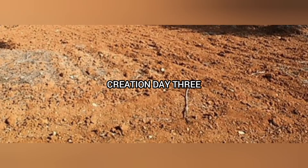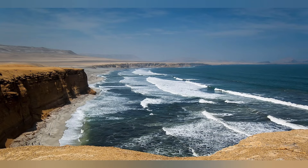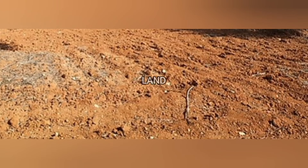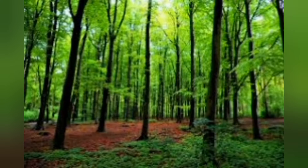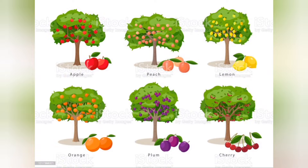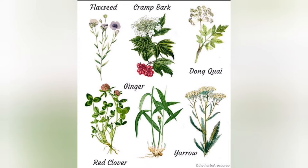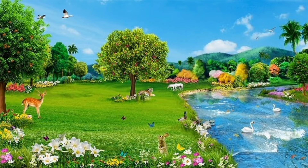Creation Day 3. Genesis chapter 1 verse 9 to 13. God creates dry land. Continents and islands are above the water. The large bodies of water are named seas, and the ground is named land. God declares that all this is good. God creates all plant life both large and small, and creates this life to be self-sustaining — plants can reproduce. The plants were created in great diversity, many kinds. The earth was green and teeming with plant life. God declares that this work is also good.